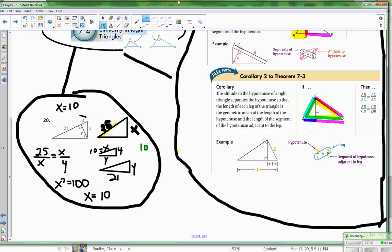So I'm going to go 4 over Y equals Y over 21. And I get Y squared equals 4 times 21. Well, 4 times 20 is 80 and 4 times 1 is 4, so that's 84.